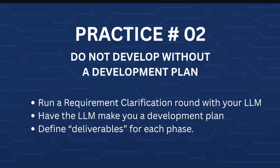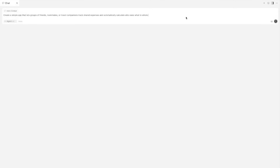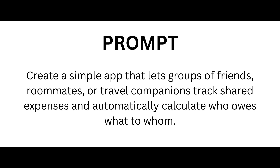Let me show you how this works. To demonstrate making a development plan with the help of an AI code agent, I will use an expense sharing application idea, and you will see how easy it is to quickly develop a development plan with a little dedicated effort. First, very quickly, I'm going to show you the recipe of disaster. I have this prompt: 'Create an app that lets groups of friends, roommates and travel companions track shared expenses and automatically calculate who owes what to whom.' This is an overly simplified prompt, but it serves the purpose of showing you how these LLMs work.